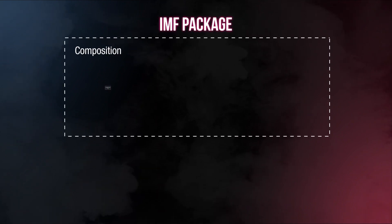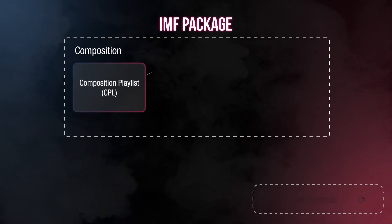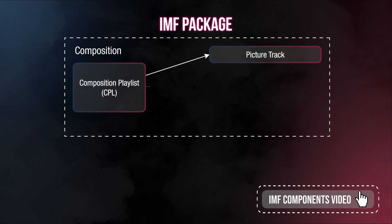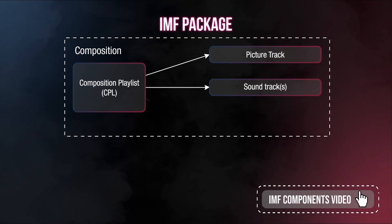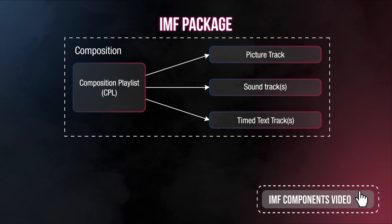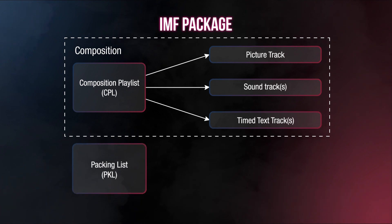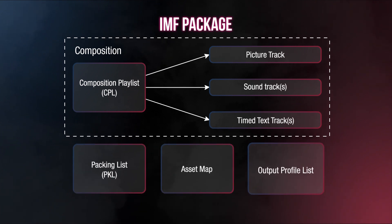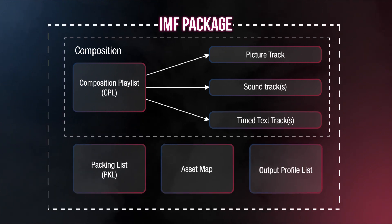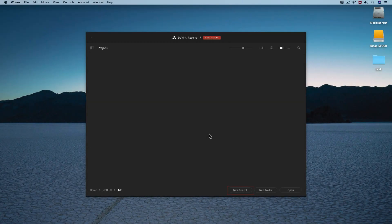Supplemental packages save human and machine resources and time — only the changes are QC'd and stored. IMF is designed to facilitate the management and processing of multiple content versions. Now let's see how we can create an IMF package for Netflix using DaVinci Resolve.